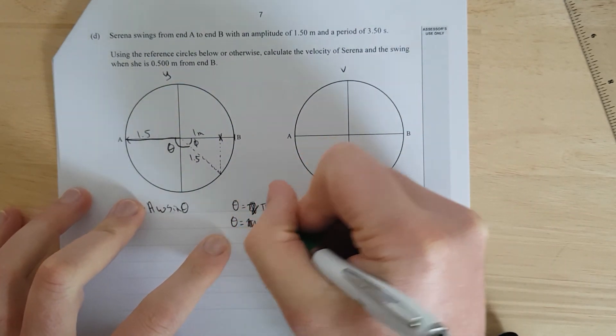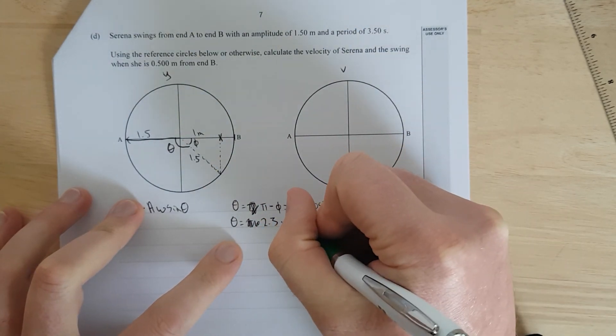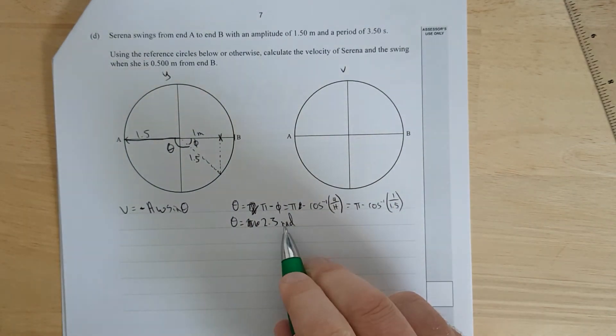And that is going to be equal to, so theta is equal to π minus, oh wait, hold on. That's equal to 2.3. I just calculated that then. Radians. And then, I'm going to plug this into here.